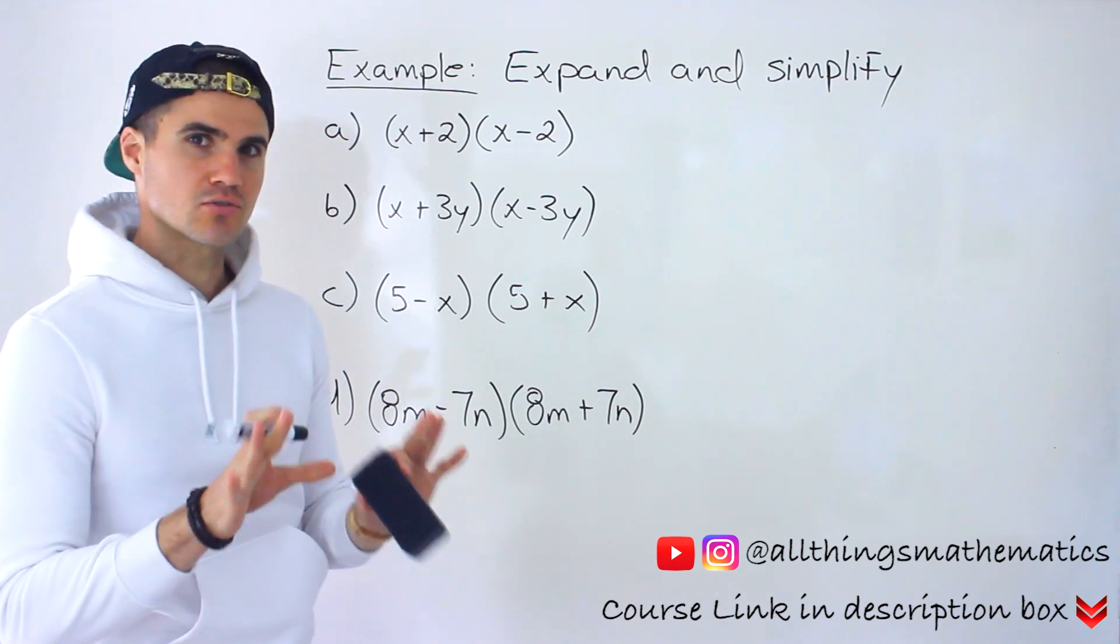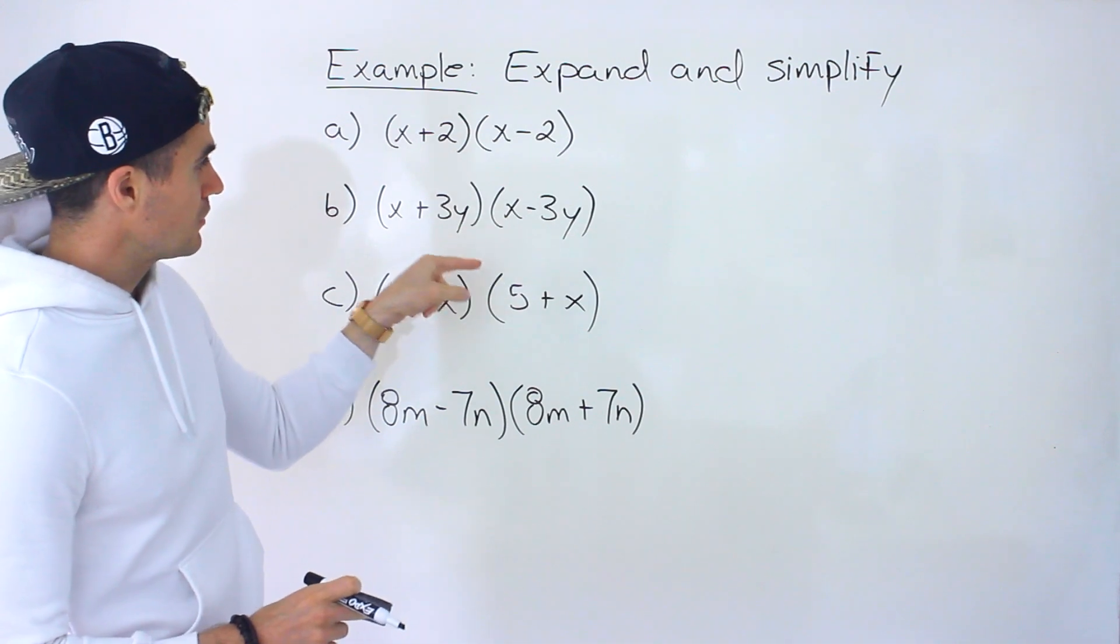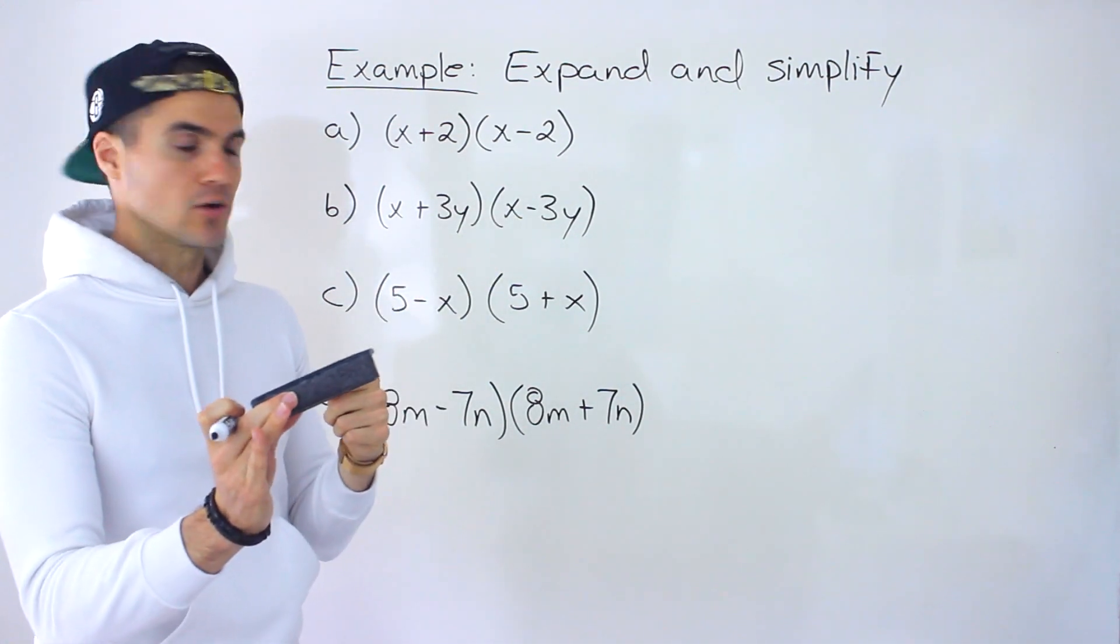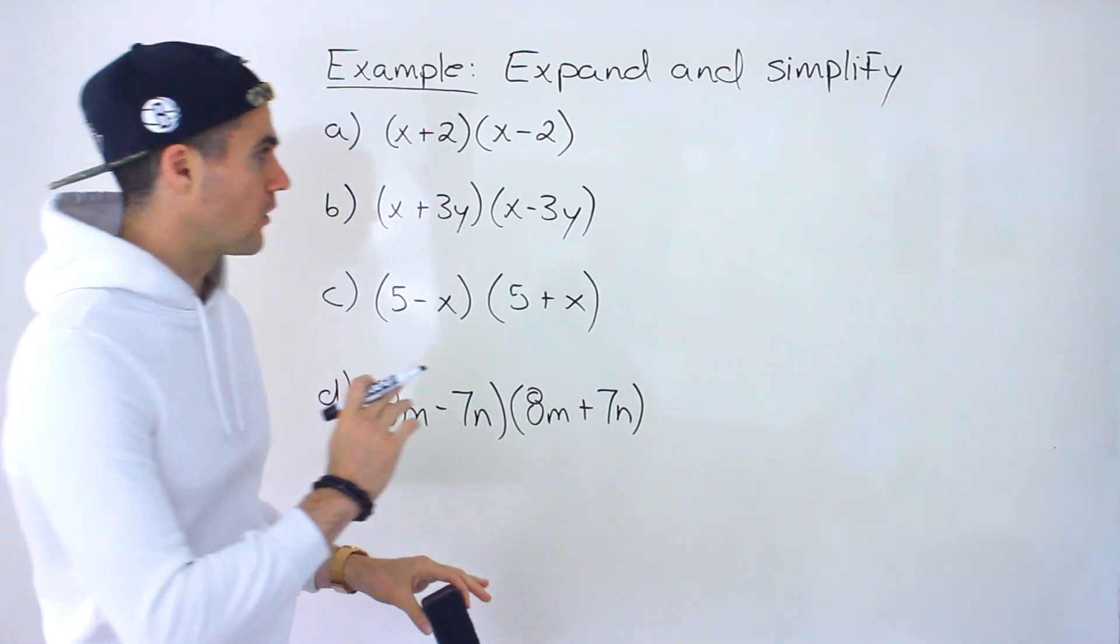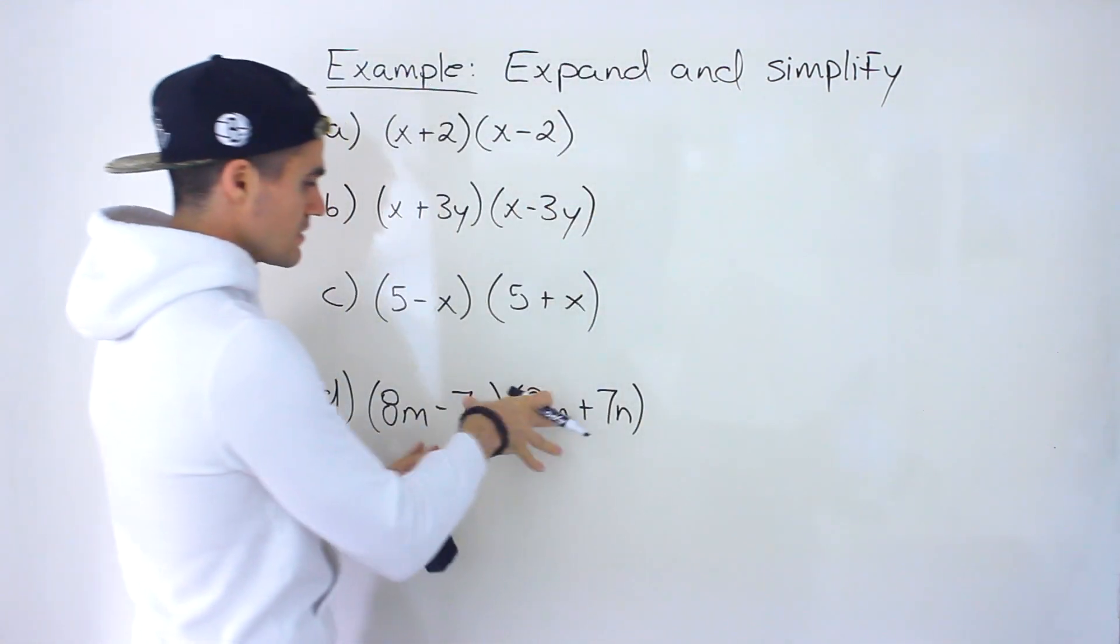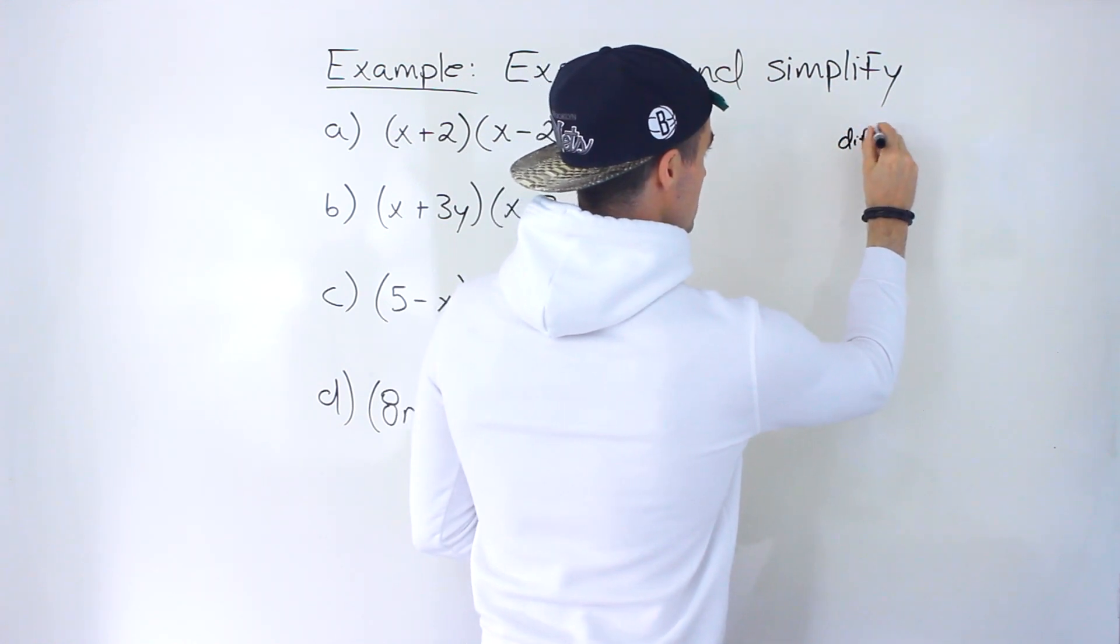And notice that this is a special case here because the brackets are the same. The only thing that's different is the sign in between each of the binomials. And we've gone over a couple of these special products before within other videos. But this here, this kind of situation, what it's called is a difference of squares.